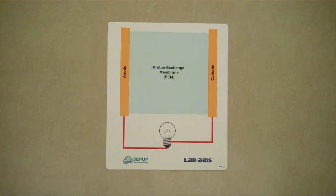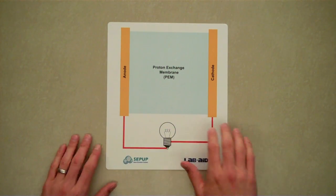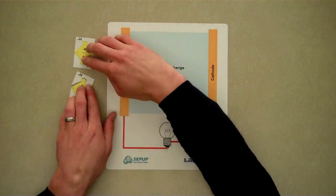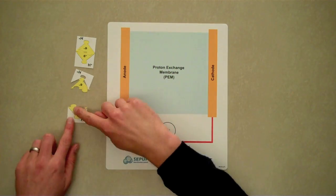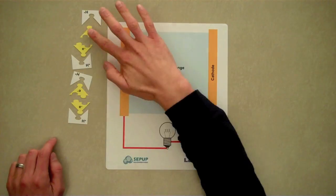The molecular modeling set functions very similarly to the fuel cell simulation. Hydrogen molecules enter the anode side of the fuel cell, where they break apart.